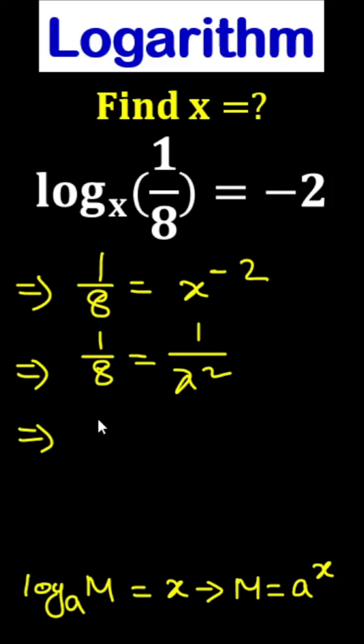So, easily we can write x square equals to 8, it means once we make square root, so x equals to 2 root 2, right? And this is our answer.